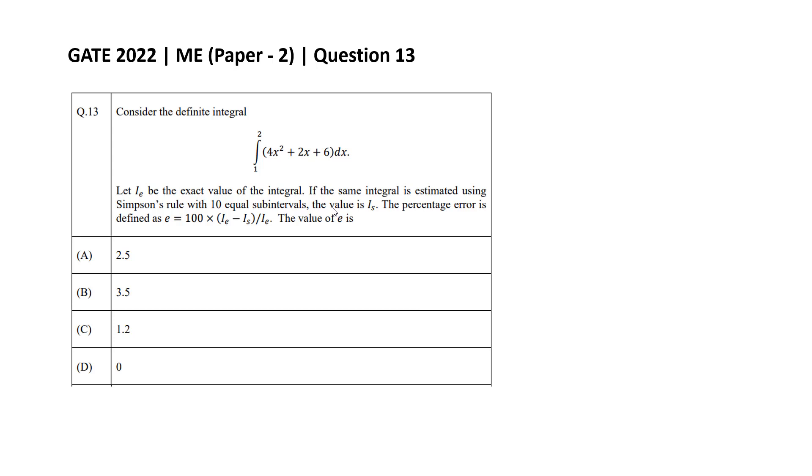Hello everyone, in this video we will solve GATE 2022 ME set 2 question number 13. This question is from the topic of numerical methods in engineering mathematics. The question is: consider the definite integral of 4x squared plus 2x plus 6, integrating from 1 to 2 dx. Let I be the exact value of the integral.